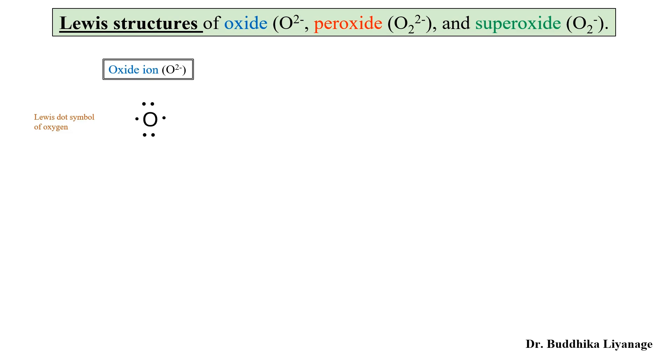Neutral oxygen has six valence electrons as two lone pairs and two singly occupied electrons. This is the Lewis dot symbol for atomic oxygen. Now, two minus charge on oxide ion means two extra electrons we need to add onto the neutral oxygen.